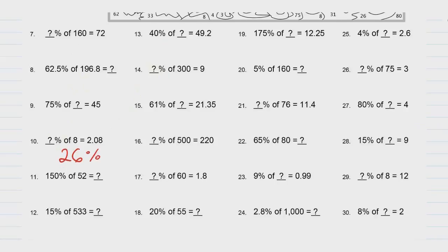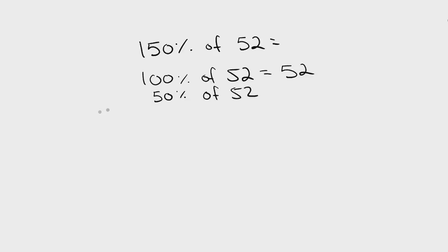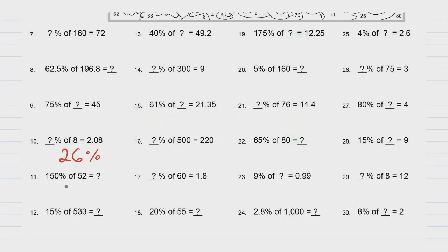Problem 11: 150% of 52. I'm going to take a shortcut: 100% of 52 means you have the entire thing, which is 52. And 50% of 52 means you have half of 52, which is 26. Putting it together: 100% plus 50% is 150% of 52 equals 52 plus 26, which is 78. So the answer is 78.